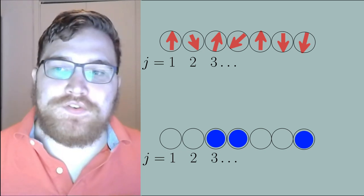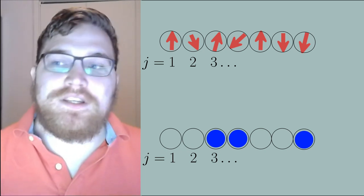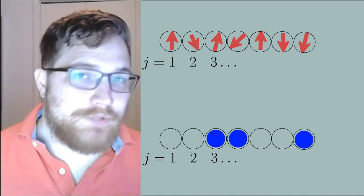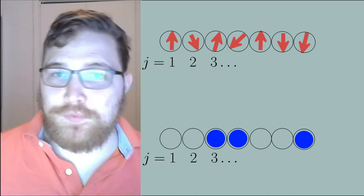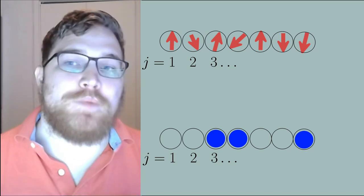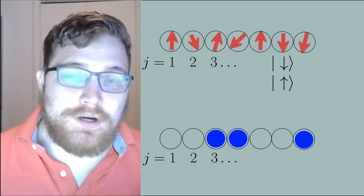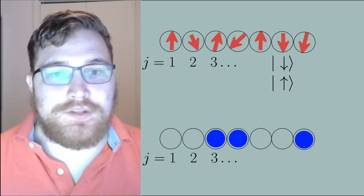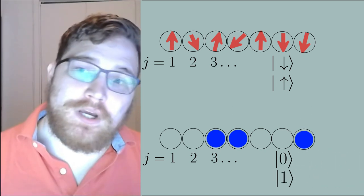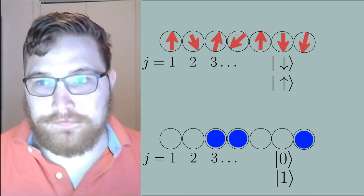If we zoom in at one site in both cases, we see a degree of freedom that has two levels. For the lattice site with spin degrees of freedom, our spin can either be up or it can be down. For the fermion example, due to the Pauli exclusion principle, we either have one fermion in the state or we don't have a fermion in the state.